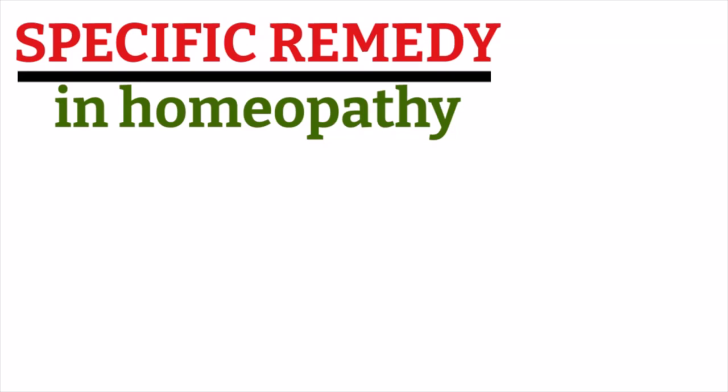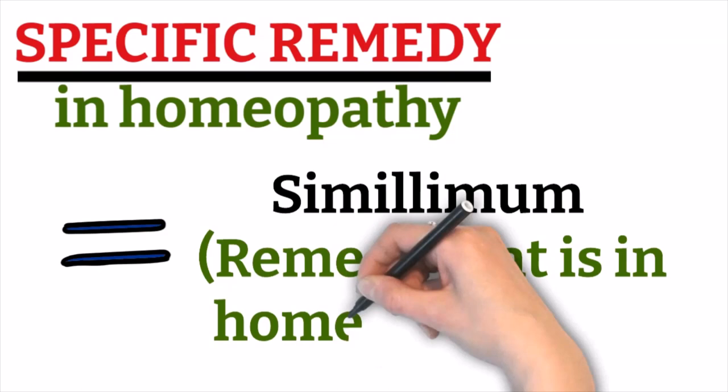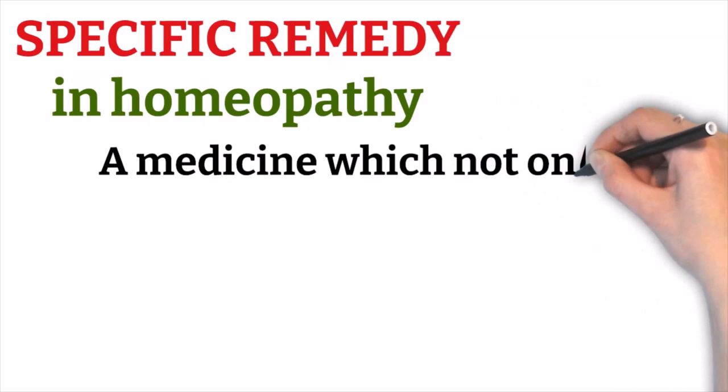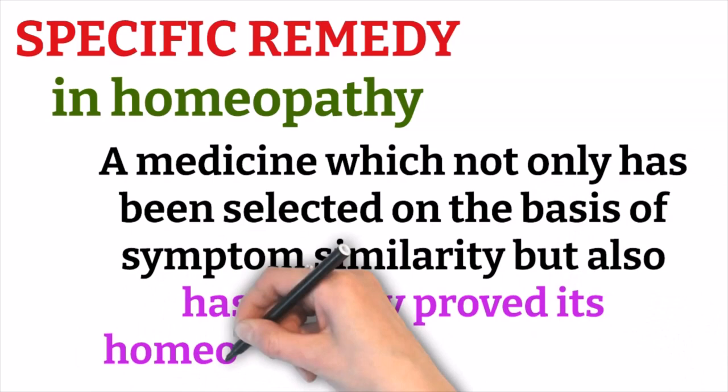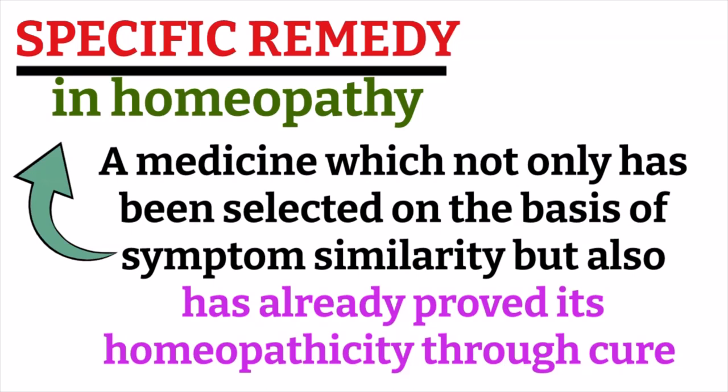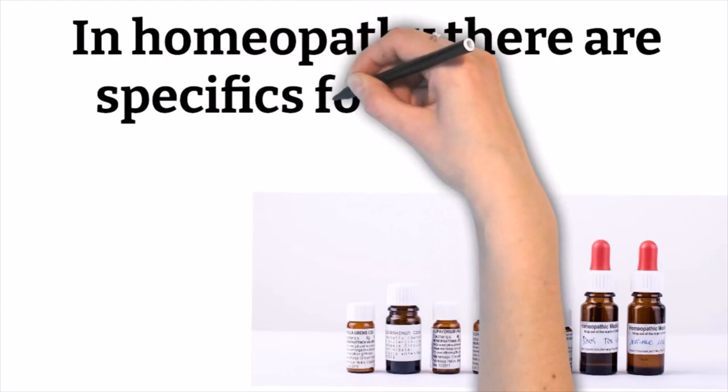The specific remedy in homeopathy is what we call the similimum — the remedy that is in homeopathicity. In other words, a medicine which has not only been selected on the basis of symptom similarity but has also already proved its homeopathicity through cure is known as the specific remedy in homeopathy.